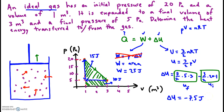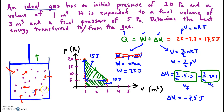So there we are. If we plug in those values — substituting in 25 and negative 7.5 — we get 17.5 joules. That's the amount of heat energy that was transferred into the system when the graph looked like this.